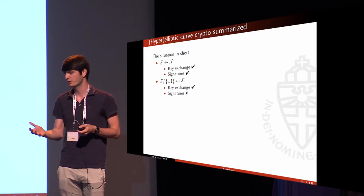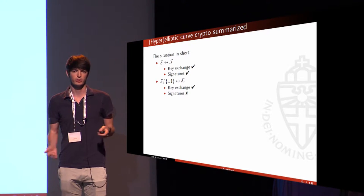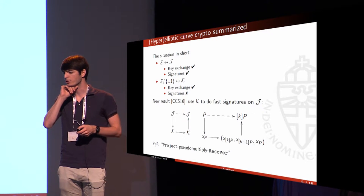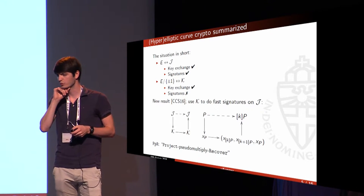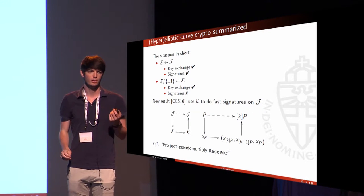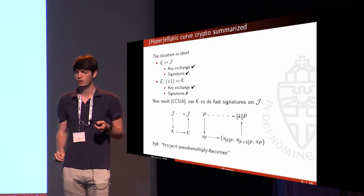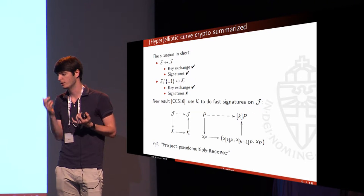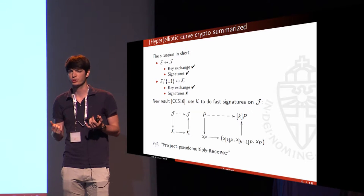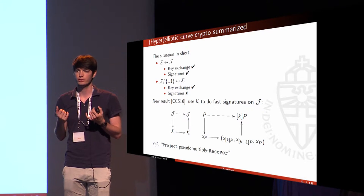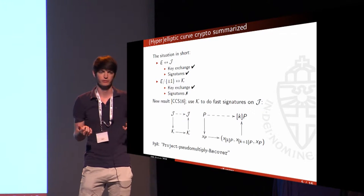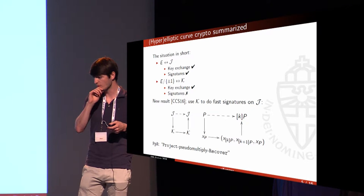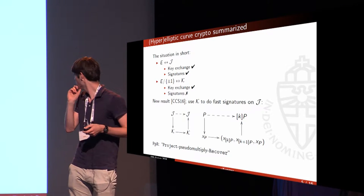Summarized: we can either use elliptic curves or Jacobians and do both key exchange and signatures, or we can go down to the Kummer varieties, which gives us very fast, efficient, easy constant-time key exchange, but we lose signatures. That was the situation until a couple of months ago. Now there's a new result presented at ASIACRYPT by Chung, Costello, and Smith, where they say you cannot do signatures on the Jacobian directly, but you can still abuse the fast, efficient Kummer arithmetic for this.